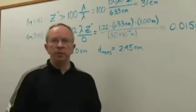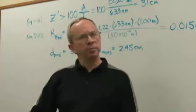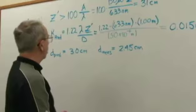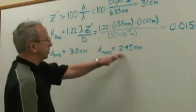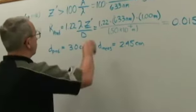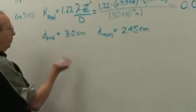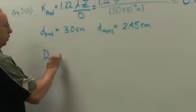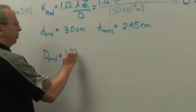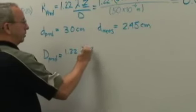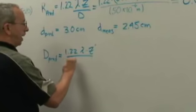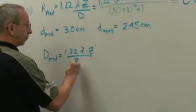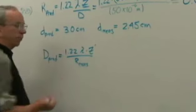Suppose that 50 micron pinhole is subject to question. Maybe it's not really 50 microns. What would that, suppose we measured our disc at 2.45 and we solved for the diameter of our pinhole. Then the diameter for our pinhole predicted would equal 1.22 times the wavelength times the screen distance divided by the radius of our airy pattern.